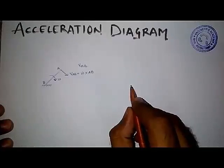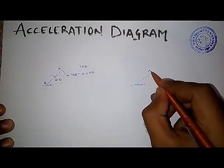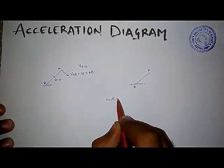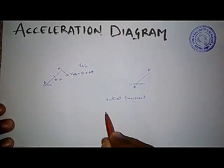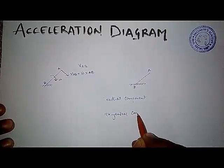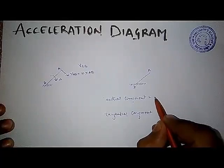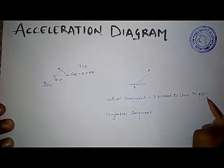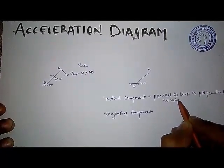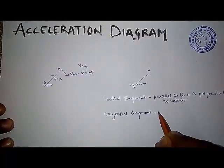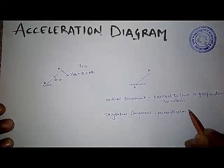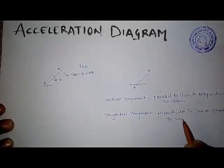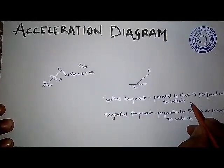Now, similarly, if we need to find the acceleration of A with respect to B, we need to find two components: the radial component and the tangential component. The radial component is parallel to the link, or we can say perpendicular to velocity. The tangential component is perpendicular to the link, or we can say parallel to velocity.